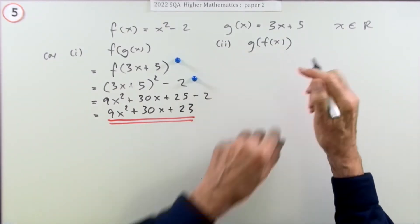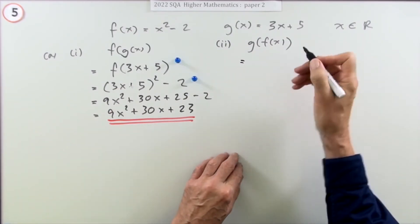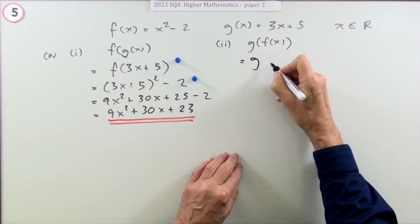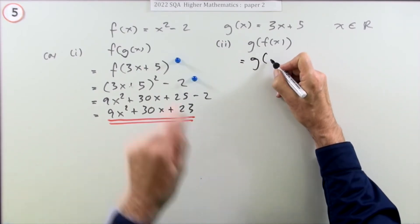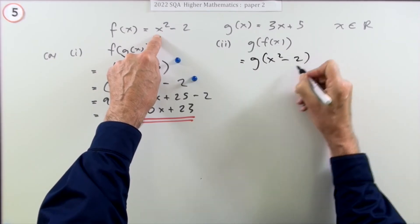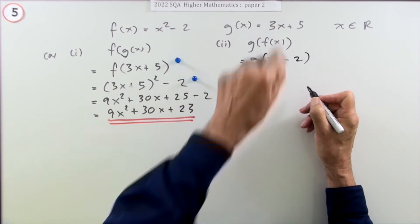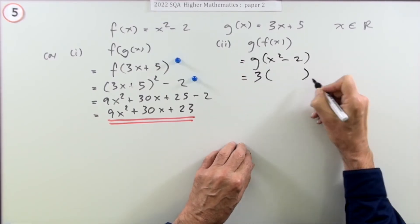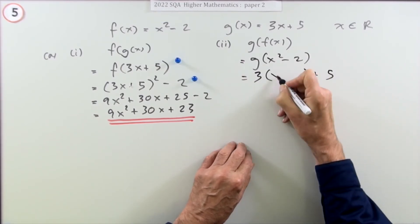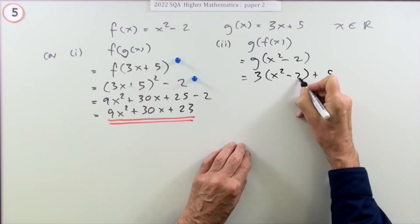Now there's only one mark for this one because you're doing the same thing. g(f(x)) means g(x squared minus 2). What does g do to whatever it gets? It does 3 times it plus 5.